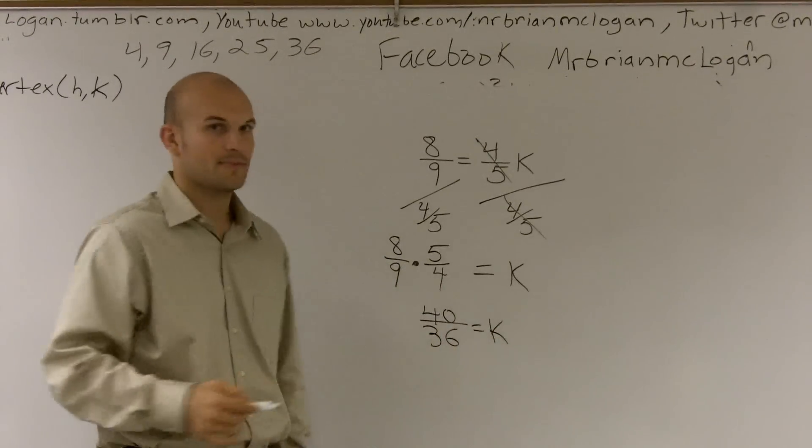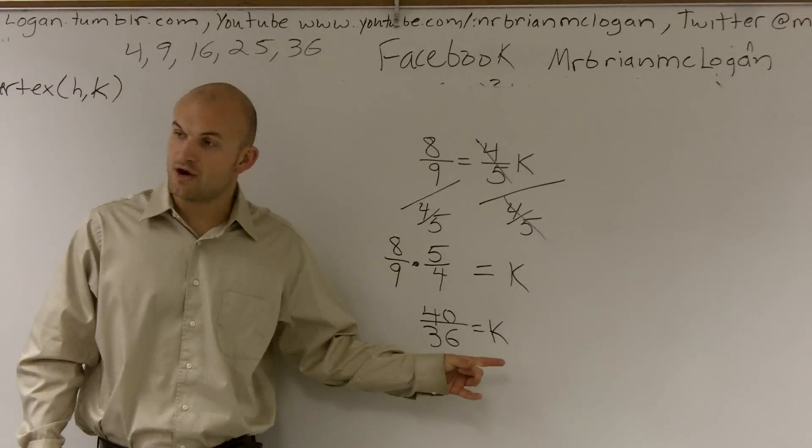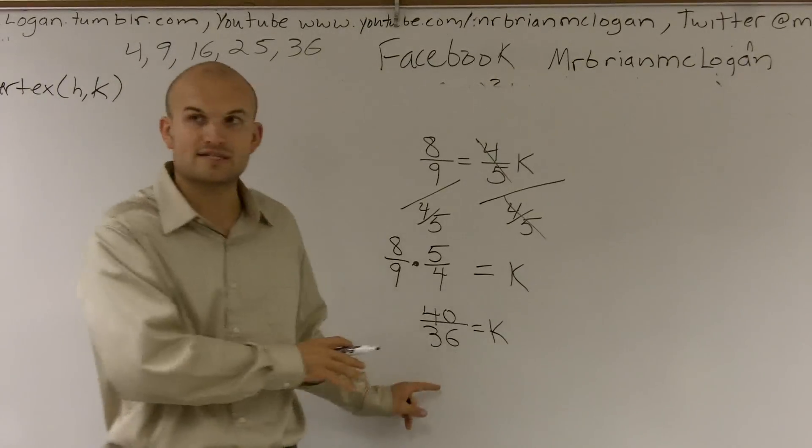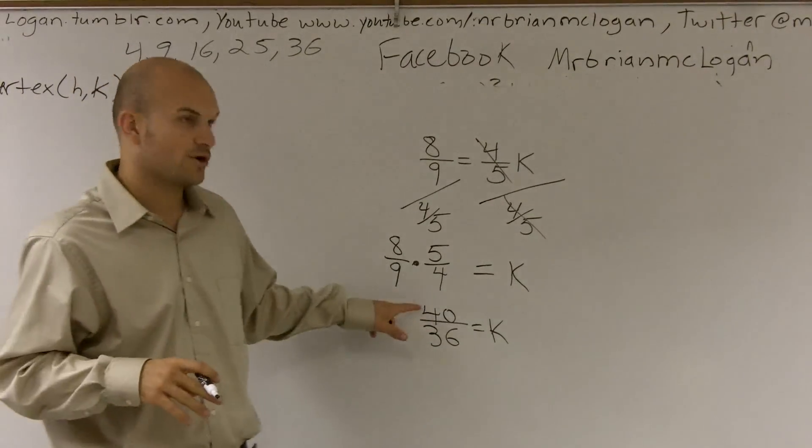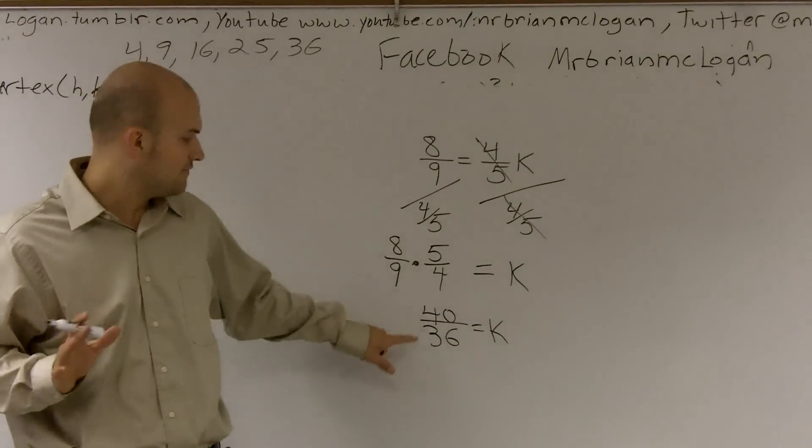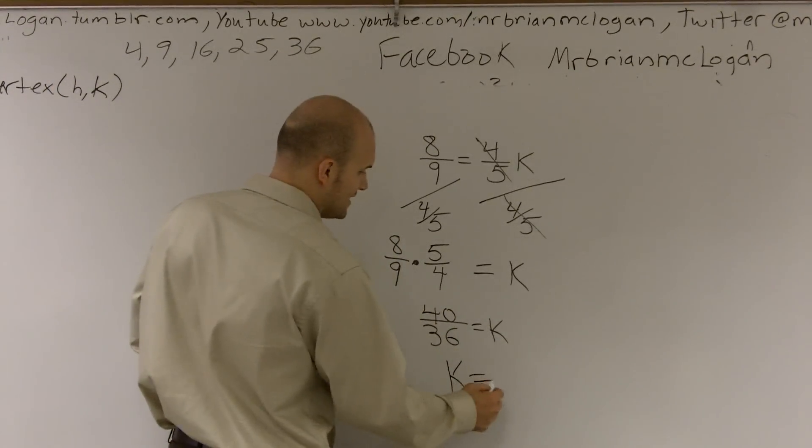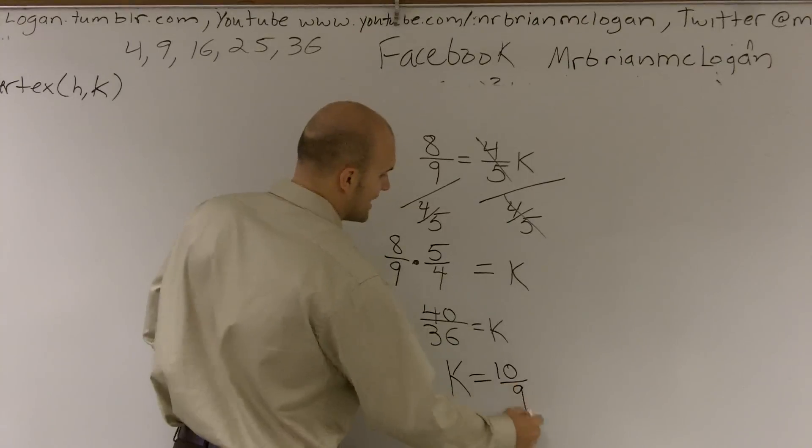40/36 equals k. Now the next thing we can do is we can always look to reduce our fraction, and you say what is the largest number that goes into both 40 and 36? You say four. Four goes into 40 ten times. Four goes into 36 nine times. So I'm going to rewrite my problem as k equals ten-ninths.